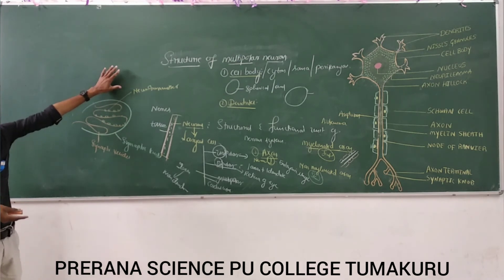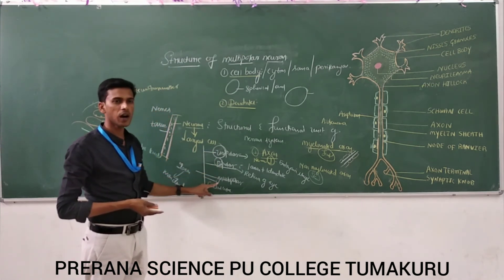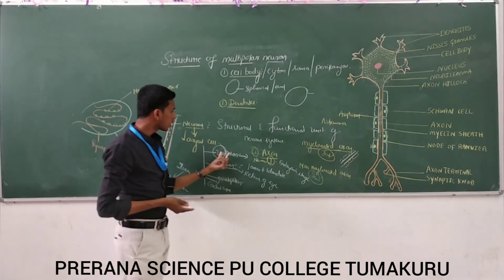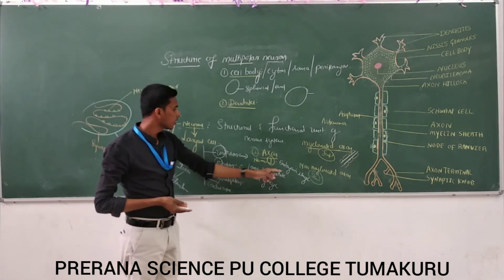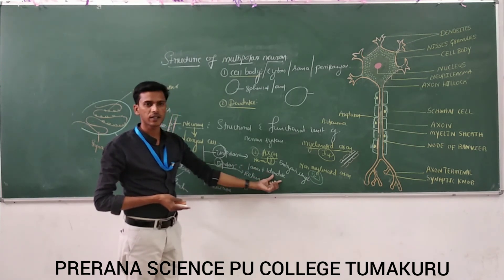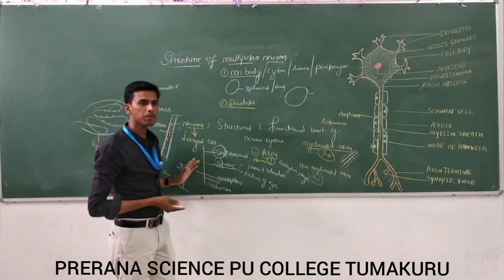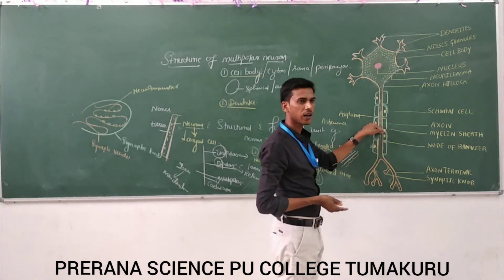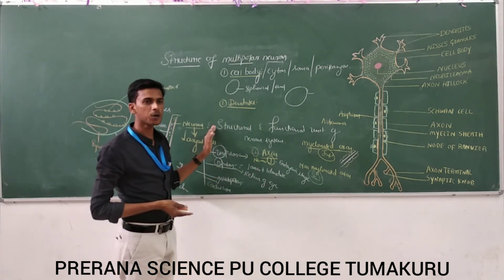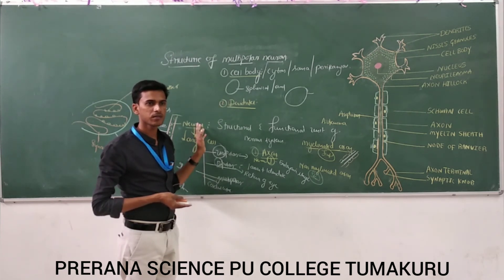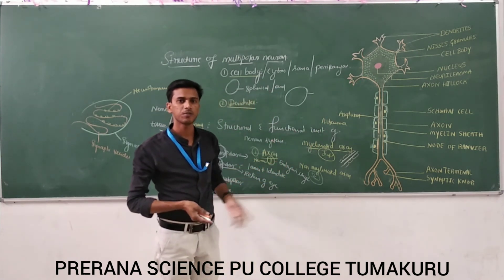Neurons can be classified into three types based on the number of axons. If the neuron has only one axon, it is unipolar — found in the embryonic stage. If the neuron has one axon and one dendrite, it is bipolar. If the neuron has one axon and many dendrites, that is the multipolar neuron, as shown in the diagram. Today we studied the structure of the multipolar neuron. Thank you.